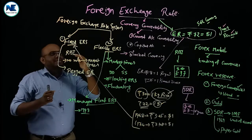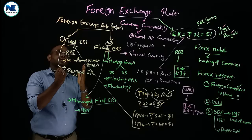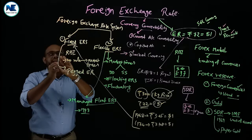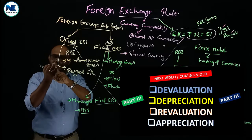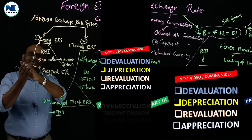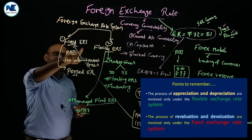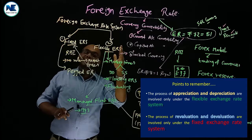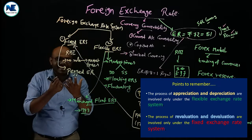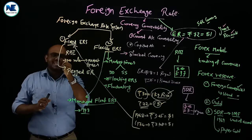In the coming video, we will explain a very important area — foreign exchange rate variations — in which we need to discuss four important concepts: devaluation, depreciation, revaluation, and appreciation. Both devaluation and revaluation come under the fixed exchange rate system, while appreciation and depreciation come under the flexible exchange rate system. We will discuss all these points in a very systematic way in the coming video. Thank you so much, have a nice day.